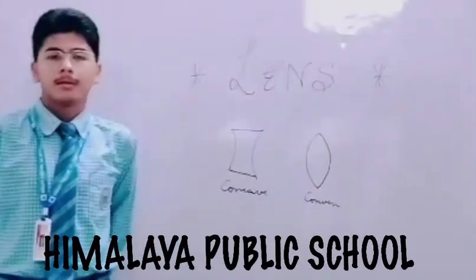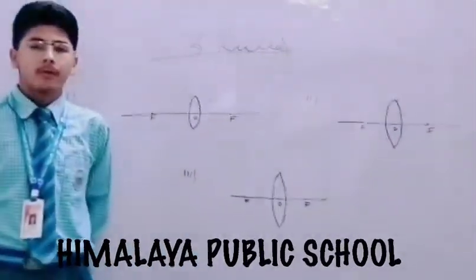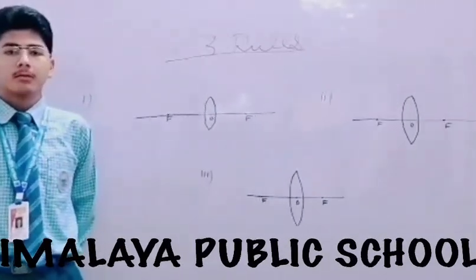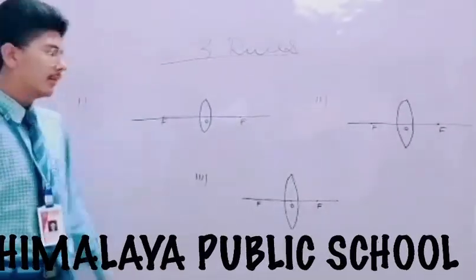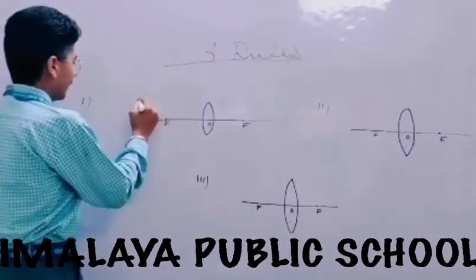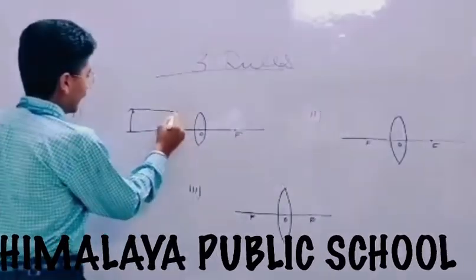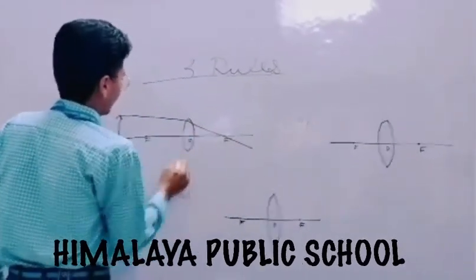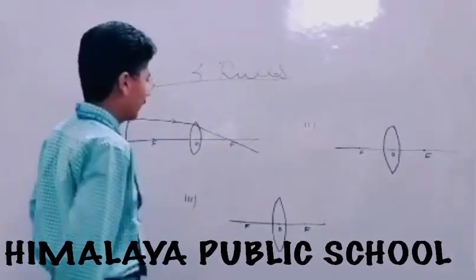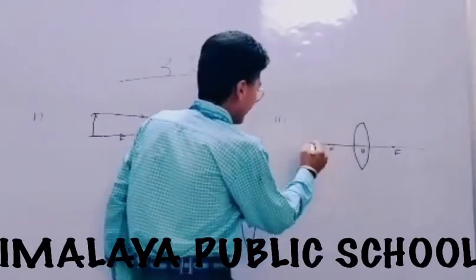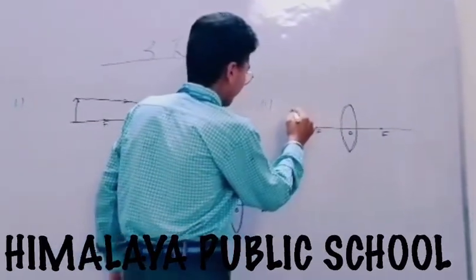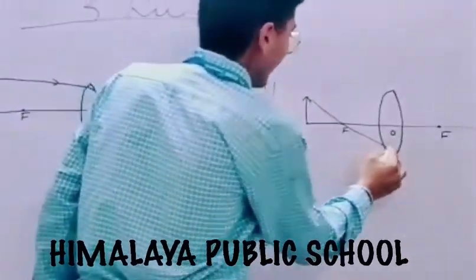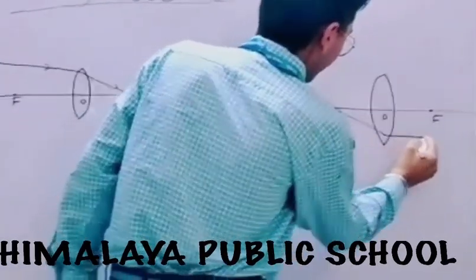Now let's start to draw ray diagrams. Before drawing ray diagrams we must know some three basic rules for its construction. First is that if any ray of light is coming parallel to the principal axis, after refraction it will pass through the principal focus. Second rule is that if any ray of light is passing through principal focus, after refraction it will emerge parallel to the principal axis.